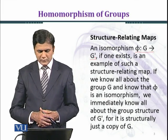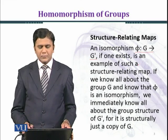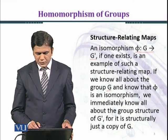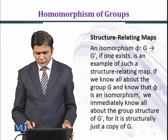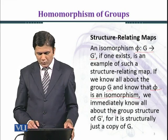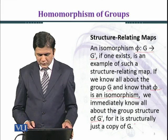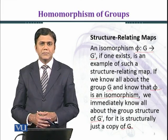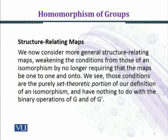An isomorphism phi from G to G prime, if one exists, is an example of such a structure-relating map. If we know all about the group G and know that phi is an isomorphism, we immediately know all about the group structure of G prime, for it is structurally just a copy of G. We now consider more general structure-relating maps, weakening the condition from those of an isomorphism by no longer requiring that the maps be one-to-one and onto. If you drop the one-to-one or onto condition, we are left with just a homomorphism.